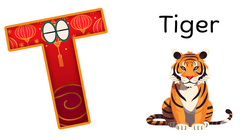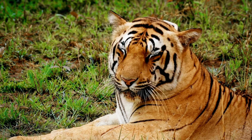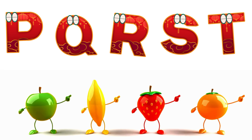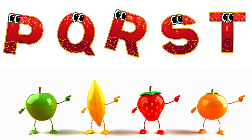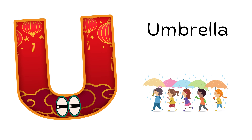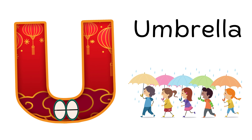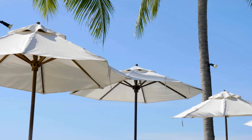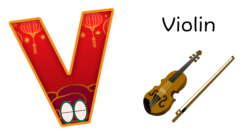T is for Tiger. T, T, Tiger, T, T, Tiger, T, Tiger. U is for Umbrella. U, U, Umbrella, U, Umbrella.